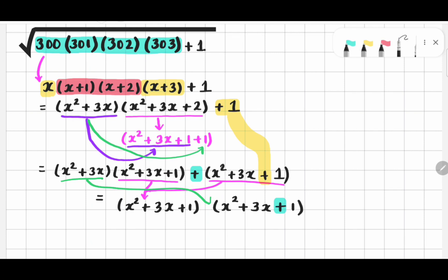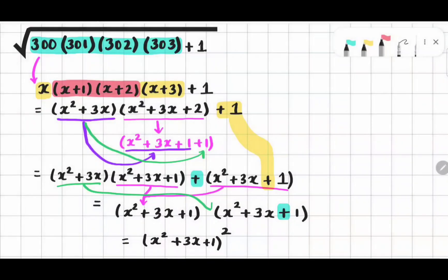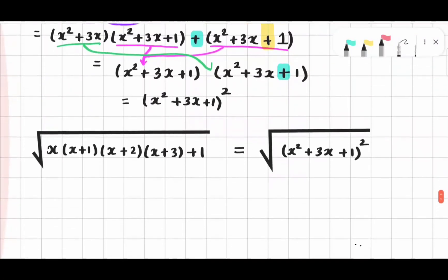Now we have twin brothers, so we can multiply them. Which means x square plus 3x plus 1 the whole square. Now in order to remove the whole square, I am going to take square root on both sides. If we do that, our equation will be like this.